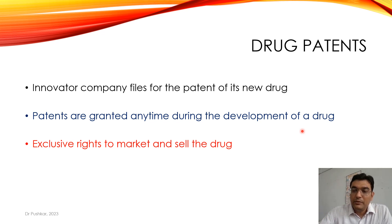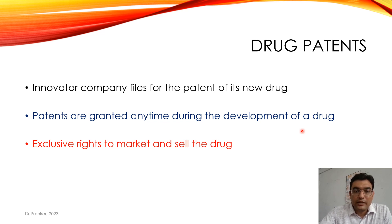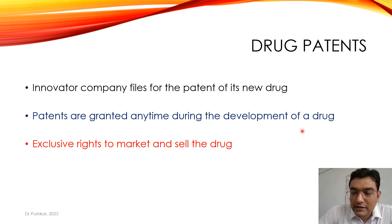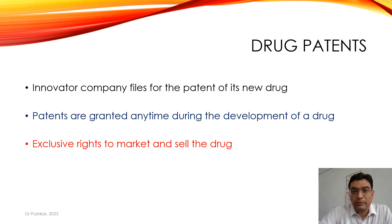The innovator company may apply for the patent during development as well. During the patent-protected period, the patent owner of a drug has exclusive rights to market and sell the drug. So how long is this patent period? That is the important point — if the patent is given to the innovator company to market and sell the drug, then how long does this patent period last?